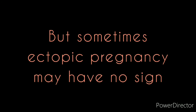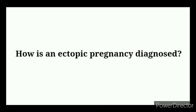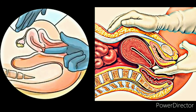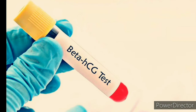How is an ectopic pregnancy diagnosed? A pelvic exam can reveal the size of the uterus, so a doctor will likely perform a pelvic exam to check it. A blood test can also be a useful way to check the level of the pregnancy hormone HCG, or human chorionic gonadotropin.